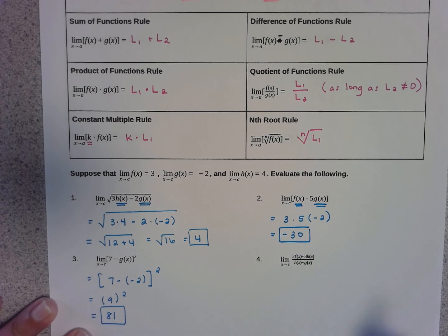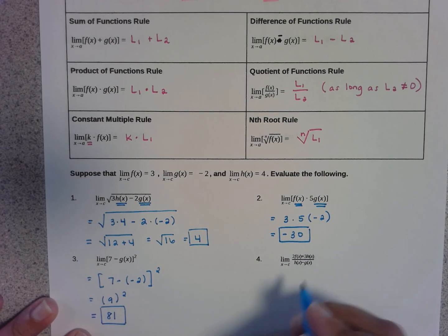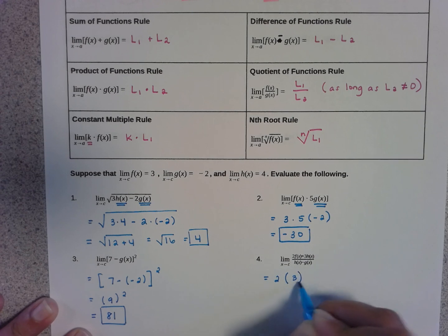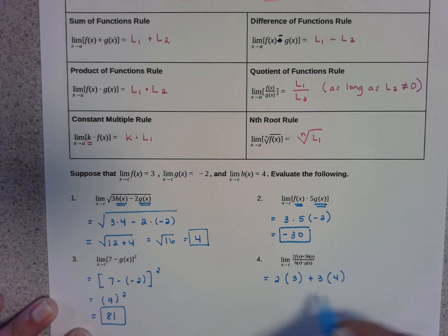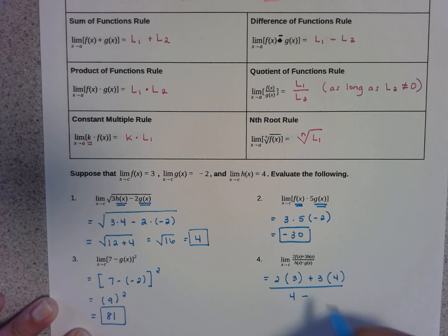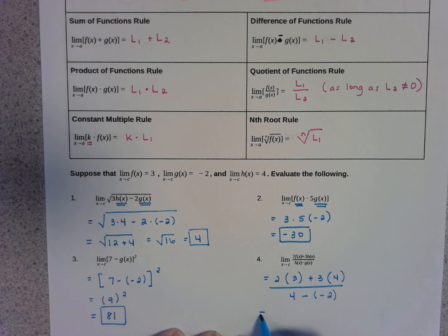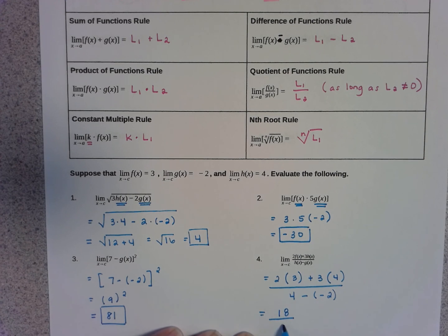Last but not least, this is again just a substitution question. So I would have 2 times the f(x) limit, which is 3, plus 3 times the h(x) limit, which is 4, over 4 minus the g(x) limit, which is negative 2. Now, 2 times 3 is 6 and 3 times 4 is 12, so on top I have 18, and on the bottom I have 6, and 18 divided by 6 is 3.